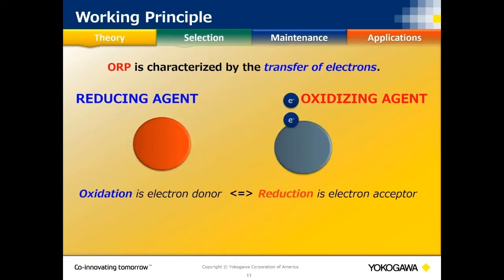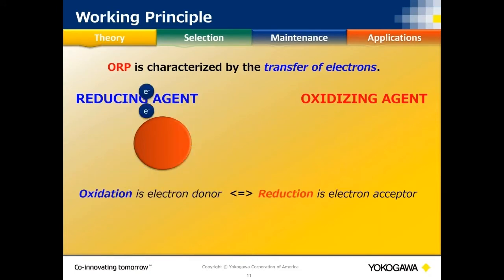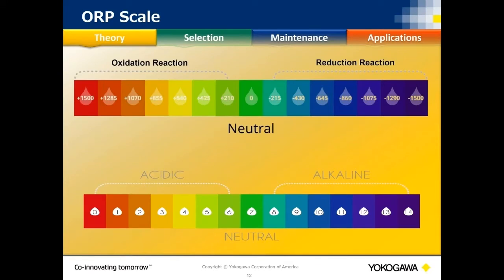The ORP scale normally goes from positive 1,500 to negative 1,500 millivolts, with 0 at the middle. A positive reading indicates an oxidation reaction — the element is giving up electrons. Anything below 0 is a reduction reaction. These reactions occur simultaneously, so the value the analyzer reads is the overall ability of the process to either oxidize or reduce.